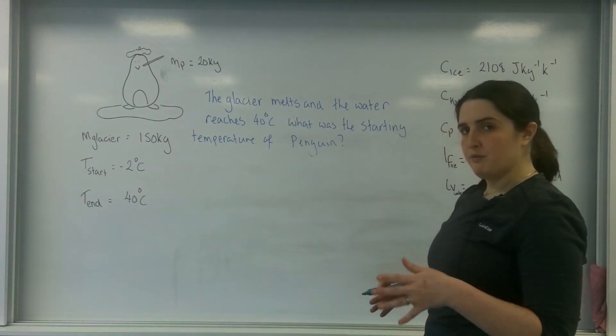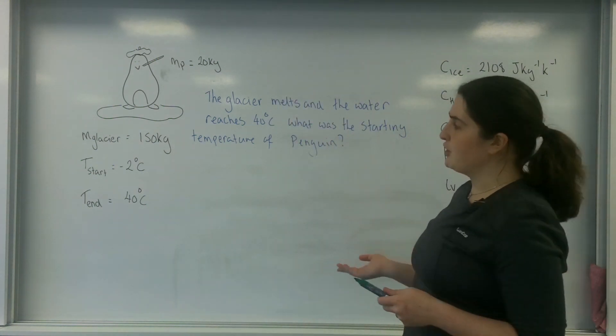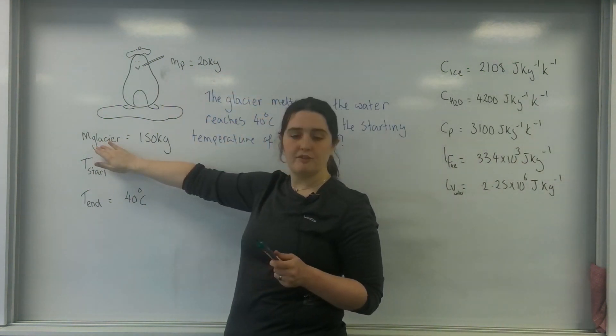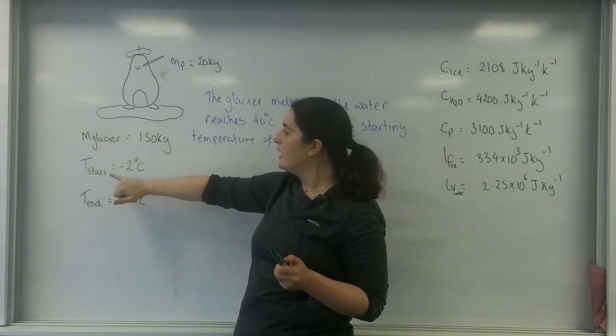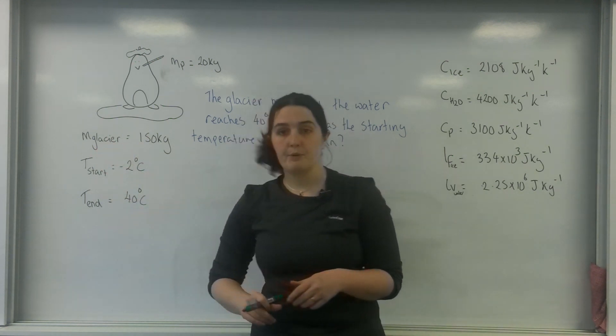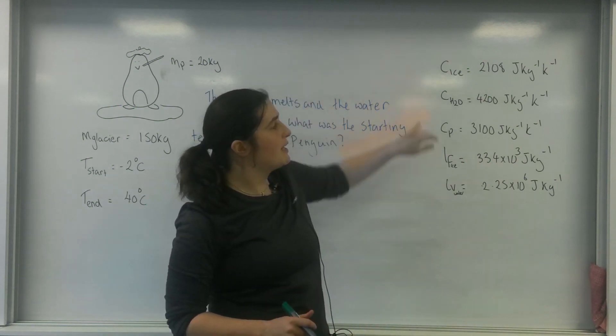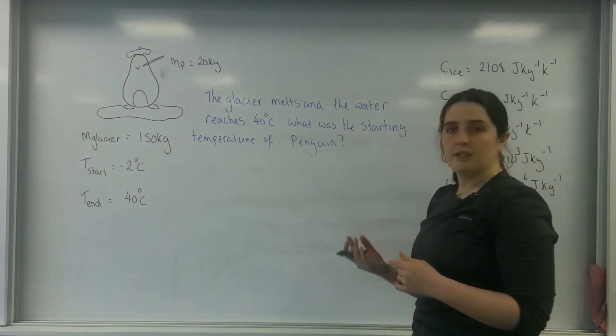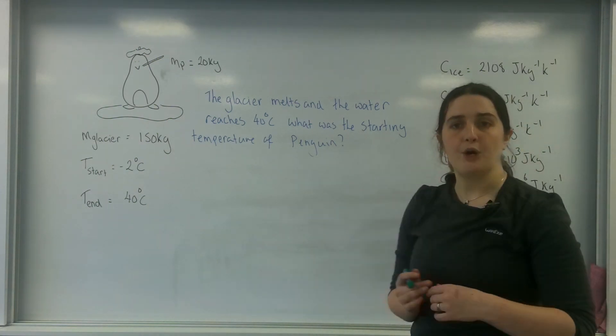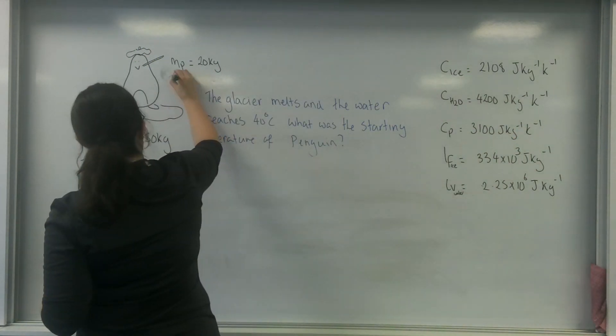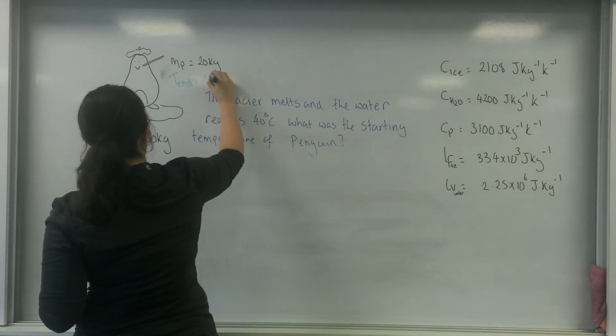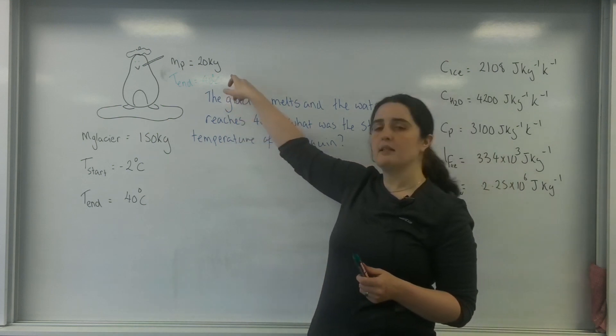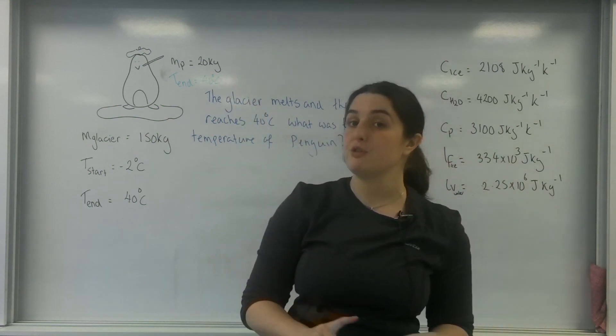So, first thing I do is I write a little bit more information down. So this is the information I've been given from the examiner. I've got mass of my penguin is 20 kilograms. I have got my mass of my glacier is 150. My starting temperature is minus 2 and my end temperature is 40. And I've been given all this information about specific heats and latent heats. Now, the first thing I do know is I do know the end temperature of the penguin, and that is 40 degrees C. Much like I said, thermal equilibrium, if that reaches 40, this must equal 40 because at that point, no energy will be transferred.